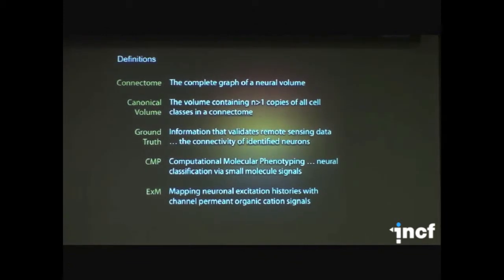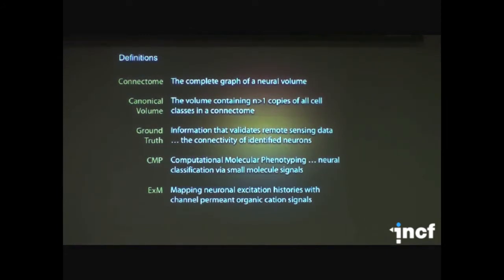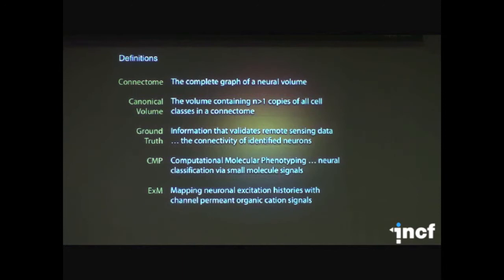What I'm going to tell you is a really brief story, very compressed, about what we've been doing in retinal circuitry. We all have different definitions for things. Our idea is that a connectome is a complete graph of some neural volume. One of the real problems is deciding what that volume should be so that you have a canonical selection of neurons.